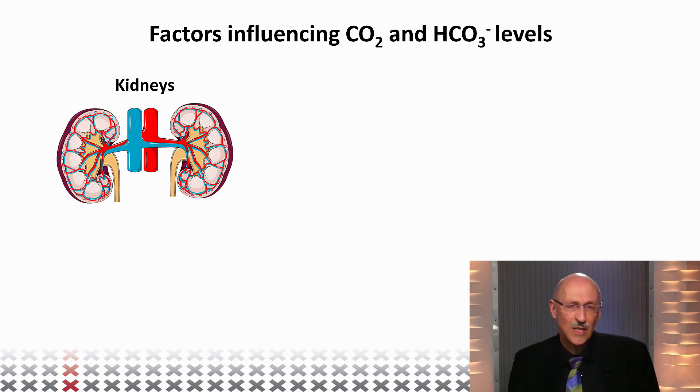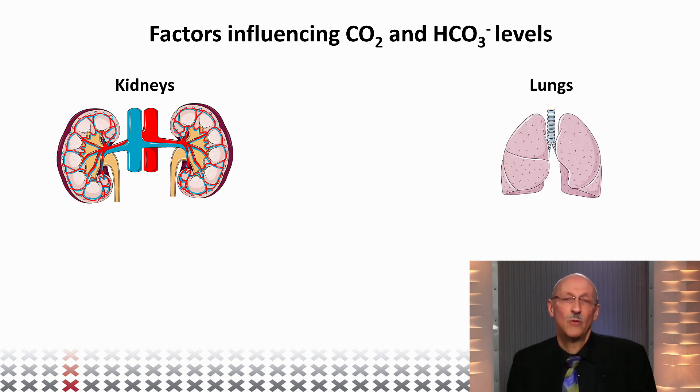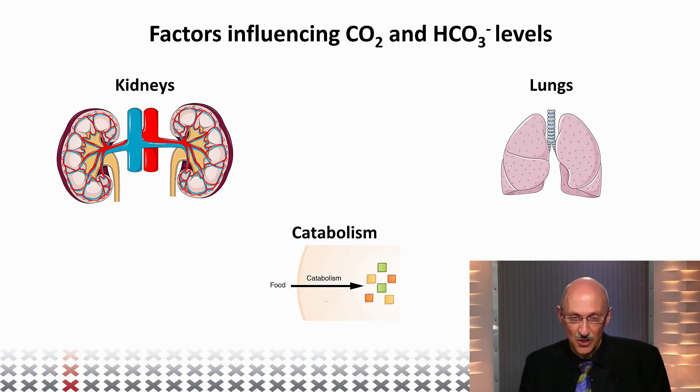The kidneys can get rid of protons by secreting them into the urine. So this is also a major player in this whole system. And we'll cut back to the role of the kidneys in lecture number three. We already discussed the lungs, the efficiency with which the lungs get rid of CO2. And finally, this has all to do with balancing the imbalance that comes from certain metabolic processes via the breakdown of food molecules.